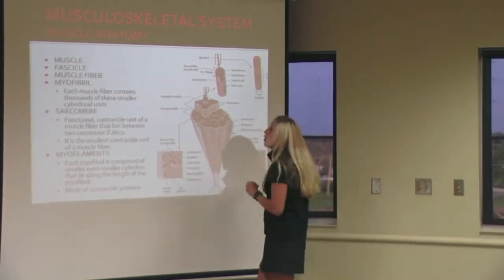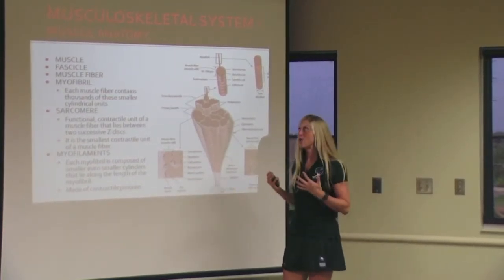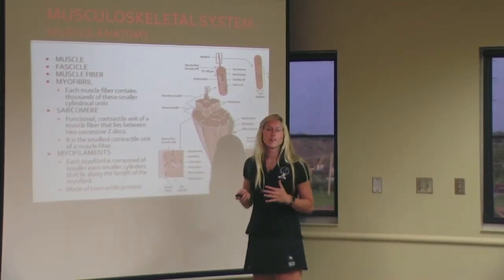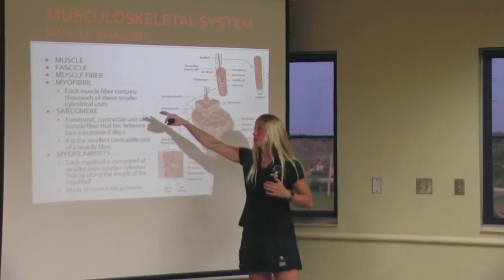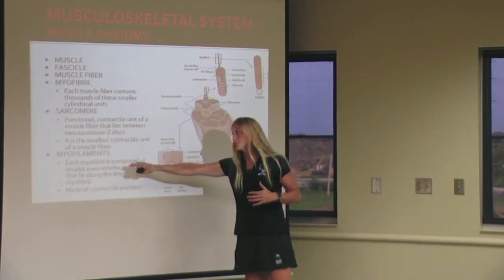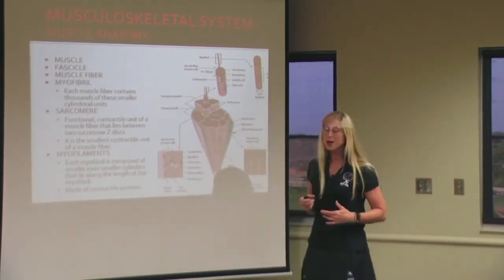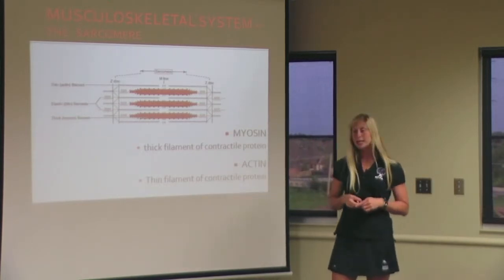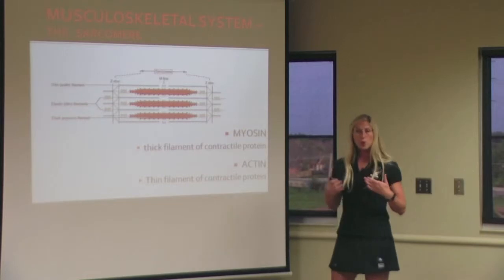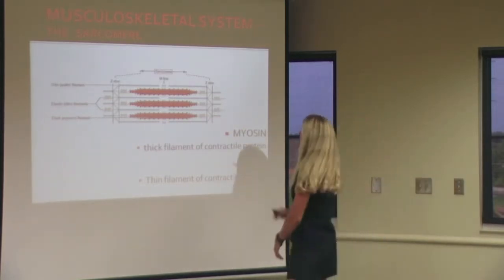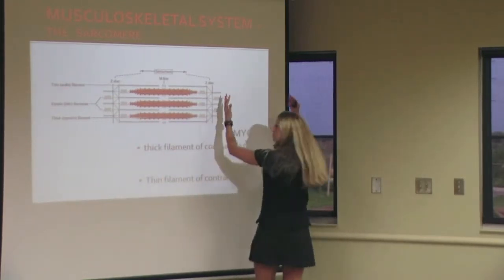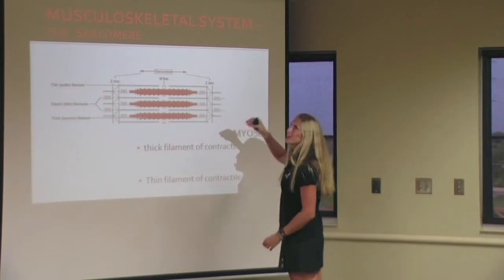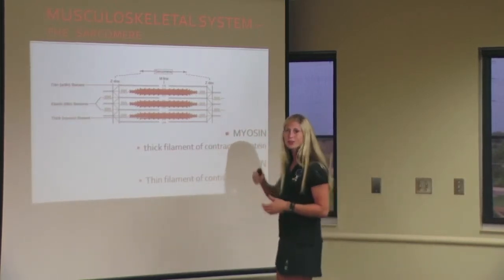The most well-known myofilaments are actin and myosin. How we believe in modern science that muscular contraction works is through what we call the sliding filament theory. The sliding filament theory happens at the level of the sarcomere through the actions of contractile proteins, actin and myosin. Myosin is referred to as the thick filament; actin is referred to as the thin filament. They are both contractile proteins that make up a sarcomere. A sarcomere next to a sarcomere next to a sarcomere makes up the myofibril, which makes up a muscle fiber, which makes up a fascicle, which makes up a muscle.